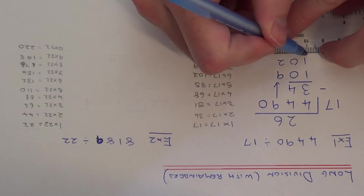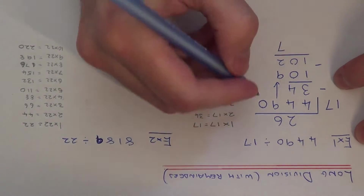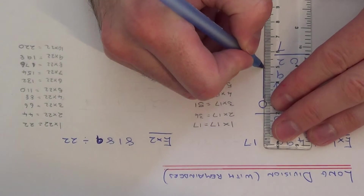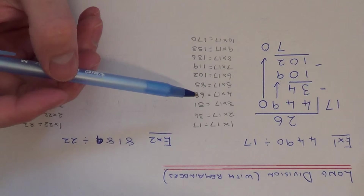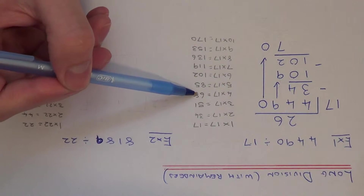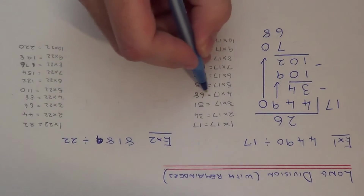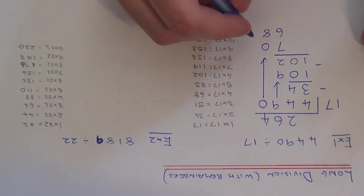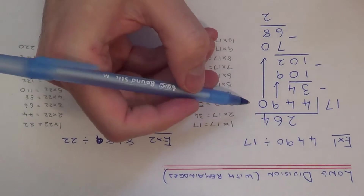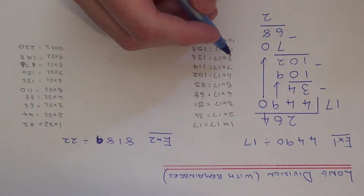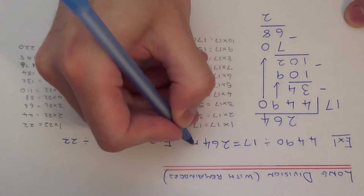Next work out 109 take away 102, which leaves us with 7. Copy the 0 down to the next line to make 70. We now need to work out 70 divided by 17: 17, 34, 51, 68, 85. 68 is our best one — that's 4 times 17. Write the 4 at the top and take these two numbers away, which gives us 2. We've got no more numbers to bring down, so our final answer is 264 with a remainder of 2.